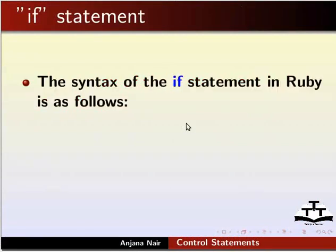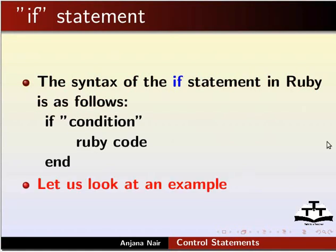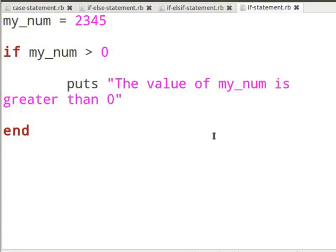The syntax of the if statement in Ruby is as follows: if condition, Ruby code, end. Let us look at an example. Create a new file in gedit as shown in the basic level Ruby tutorials and name it if-statement.rb. I have a working example of the if statement. You can pause the tutorial and type the code as we go through it.